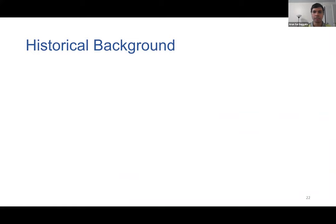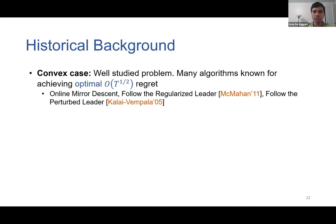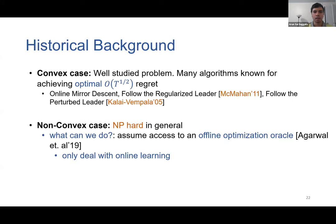Online learning has a very rich history dating back to 1950 with the work of Brown and von Neumann. Most work has focused on convex losses, where several algorithms achieve the optimal regret guarantee of square root T. However, in our case we'd like to extend such regret bounds to the non-convex case. Unfortunately, the non-convex case is computationally intractable, because even when all ft's are the same, the problem reduces to offline non-convex optimization, which is NP-hard in general.